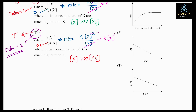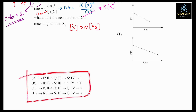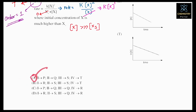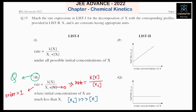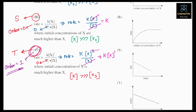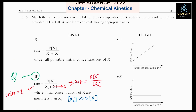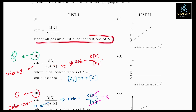So fourth option matches T. Note that this is single-matching type — each option has only one match. Be careful about that. Now let's check the first expression. We have: second matches Q, third matches S, fourth matches T. For the first expression, they say 'under all possible initial concentrations of X', meaning we can take any value.